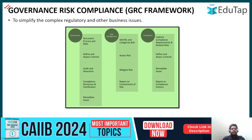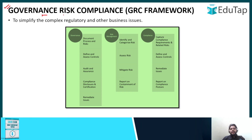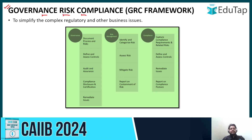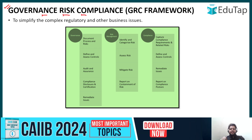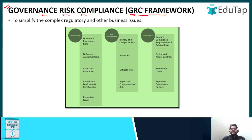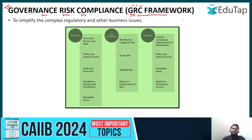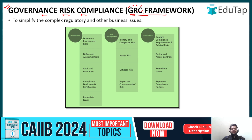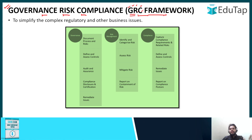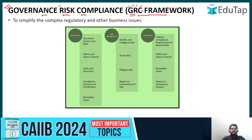As you know, governance, risk, and compliance — this is the full form of your GRC framework. The most common question asked is: what is the full form of GRC and what is its significance? G stands for governance, R for risk, and C for compliance.